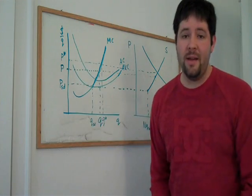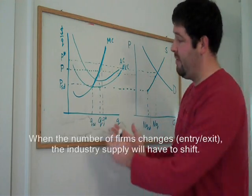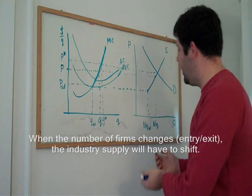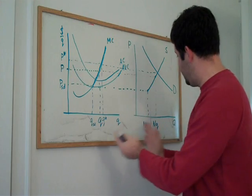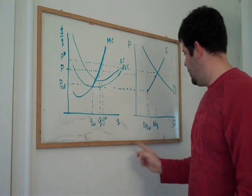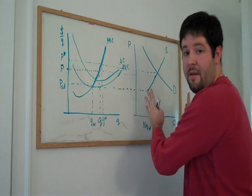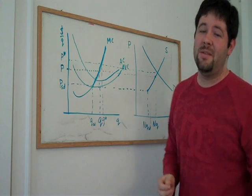So if the equilibrium price is really high, we're going to have a lot of entry. If the equilibrium price is really low, we're not going to have entry, and we're going to have a smaller number of firms. We'll go from this graph to this graph. We'll have to multiply by a smaller number.